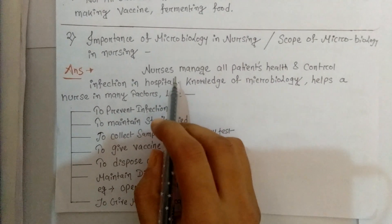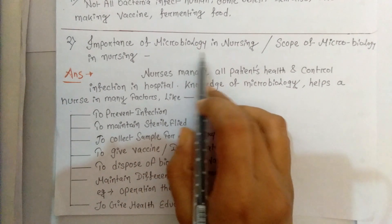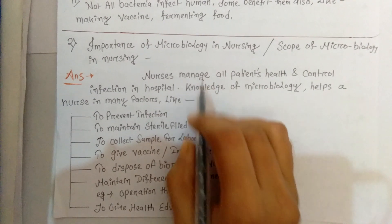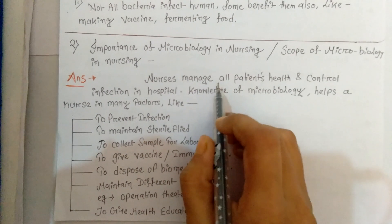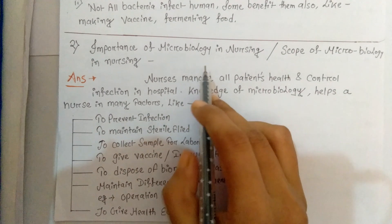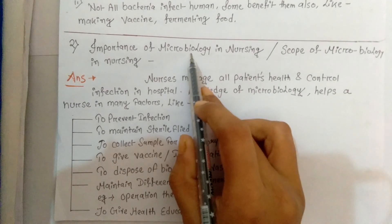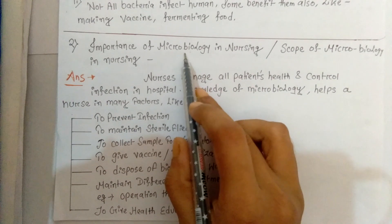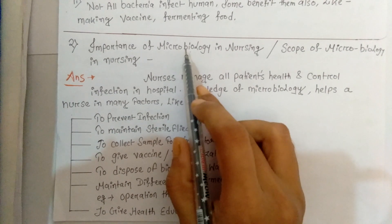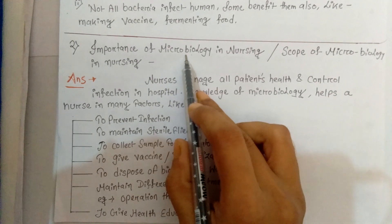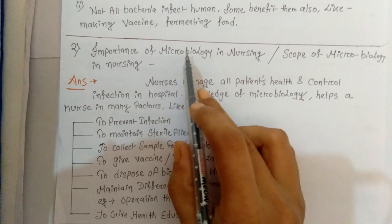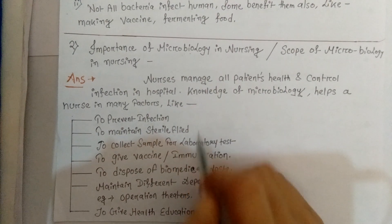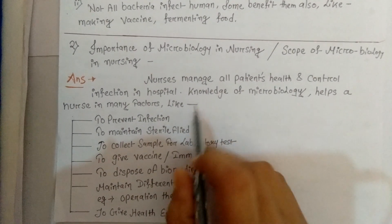If this question is asked in the exam, you will write the answer in this pattern. At first you have to write the definition of microbiology — in the first point, write the definition of microbiology, add at least one definition of microbiology, then start writing the rest of the answer in this pattern.